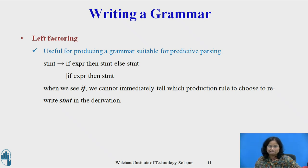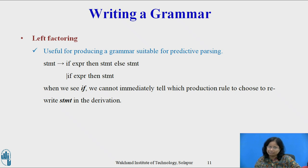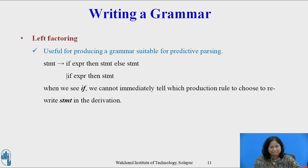Left factoring is a grammar transformation useful for producing a grammar suitable for predictive parsing. The basic idea is that when it is not clear which of two alternative productions to use to expand a non-terminal A, we may rewrite the A productions to defer the decision until we have seen enough of the input to make the right choice. For example, given the production: Statement derives if Expression then Statement else Statement | if Expression then Statement, when we see 'if', we cannot immediately tell which production rule to choose.